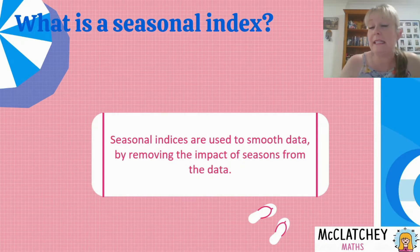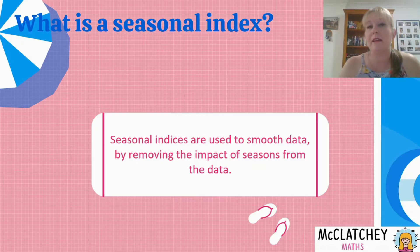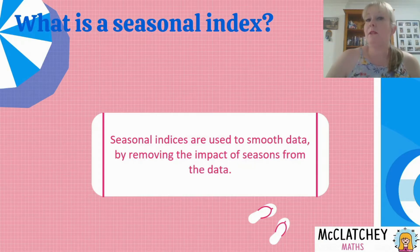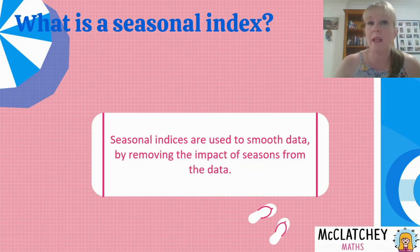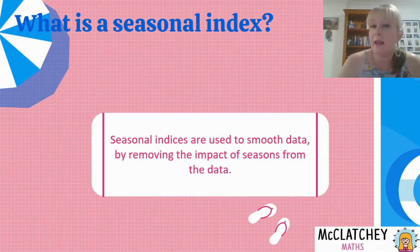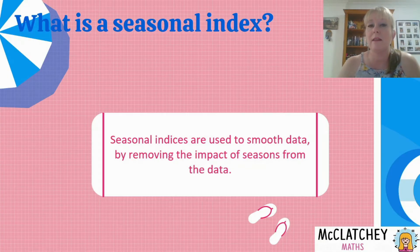Our seasonal indices are used to smooth our data and remove the impacts of seasons, so that we can see an overall trend. For example, when talking about sales of jumpers, if you're living in Queensland you'd see a big spike in winter and then declining for the rest of the year. But you'd want to compare year on year to know whether jumper sales are actually trending upward over time — and that's where we use our seasonal indices to smooth our data.